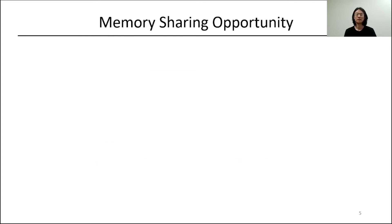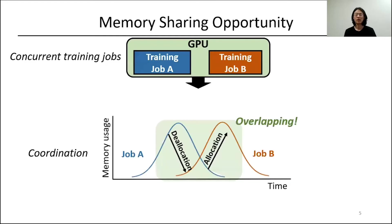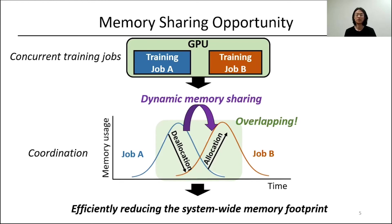Based on these unique characteristics, we spot the opportunity to overcome the weakness of previous GPU sharing techniques. The basic idea of ZICO is overlapping the deallocation phase and allocation phase of concurrent training jobs and dynamically sharing memory, so that it could reduce the system-wide memory footprint.